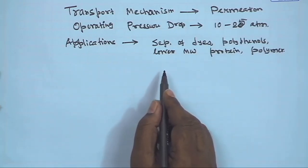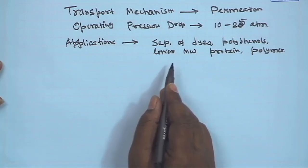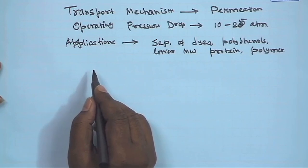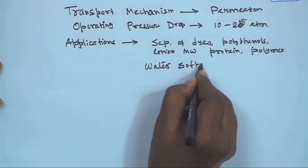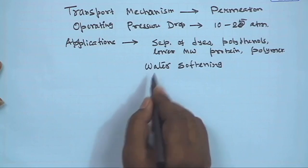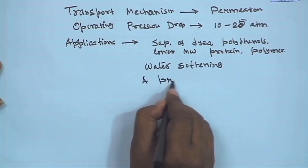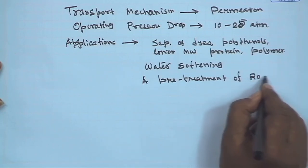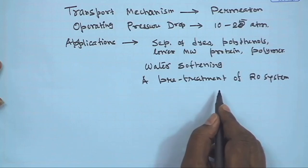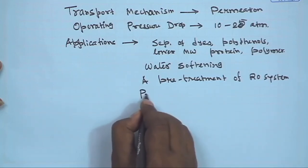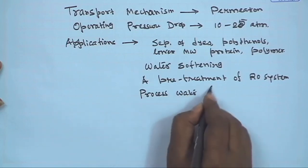Applications of nanofiltration include separation of dyes, polyphenols, lower molecular weight proteins, and polymers. It has wide application in the pharmaceutical industry and can be used for fractionation. It can also be used for water softening, because divalent salts like calcium, magnesium, and iron can be removed by nanofiltration. Nanofiltration is also used as a pretreatment for reverse osmosis systems, so that some salt is removed by nanofiltration and the load on the reverse osmosis system is reduced.